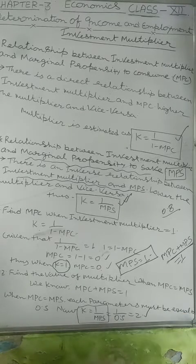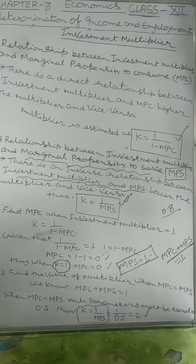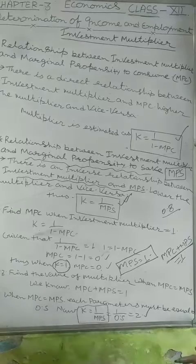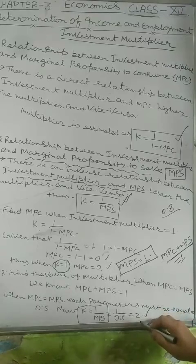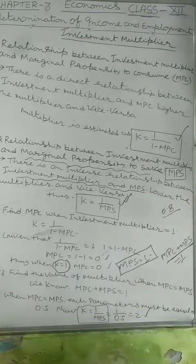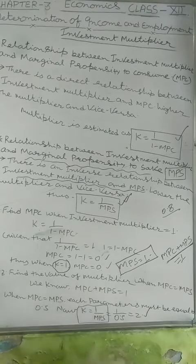That means: from ₹10 expenditure, the next person saves ₹5 and spends ₹5. Then ₹5 of income is generated for the next person, who in turn spends 0.5 of ₹5 (₹2.50) and saves ₹2.50, and so on. At last, we see that the total change in income due to investment equals 2. That is the relation of MPS with the multiplier. In the next video, we are going to analyze the working of the multiplier. Till then, bye — stay home, stay safe.